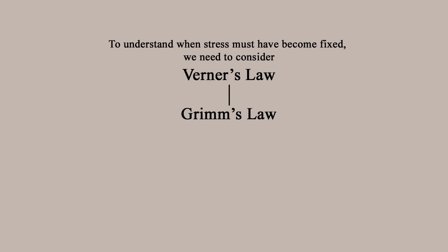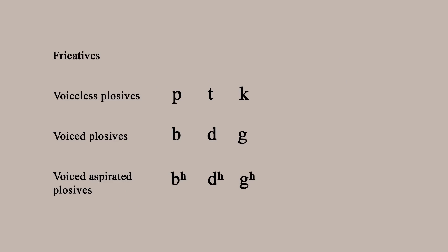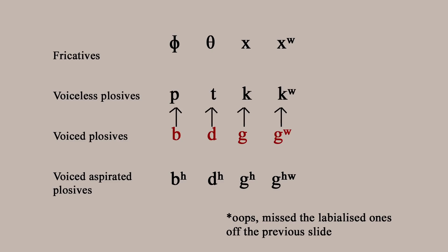Grimm's Law describes a series of sound changes — what we call a chain shift, like a dominoes falling situation — in the Indo-European branch that became Proto-Germanic. To sum them up: the voiceless plosives become fricatives, so P turns into F, T turns into TH, K turns into H. All the voiced plosives B, D, G were de-voiced, and like a sort of reverse dominoes, they fell into the places the original voiceless plosives had left, and became fricatives.